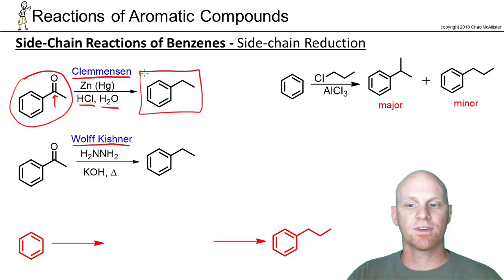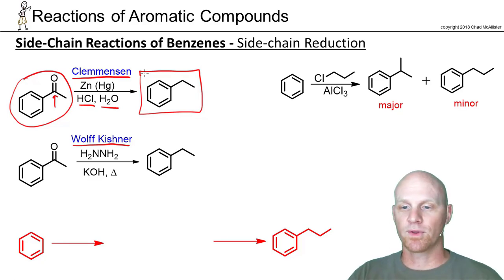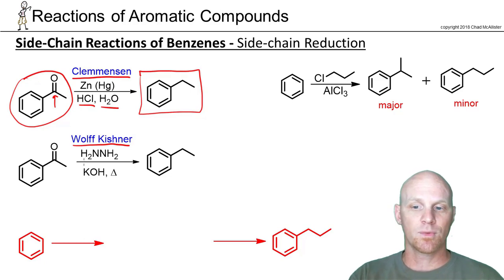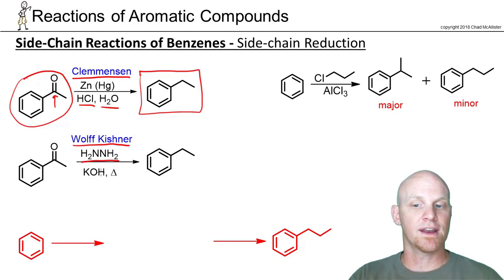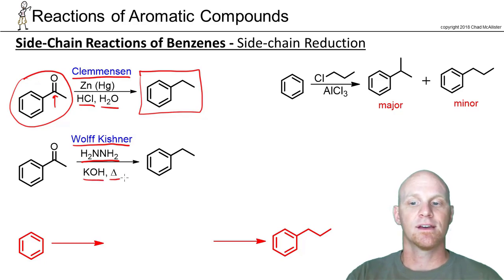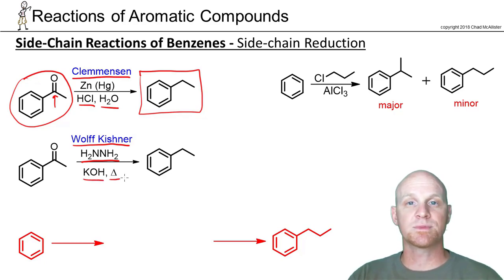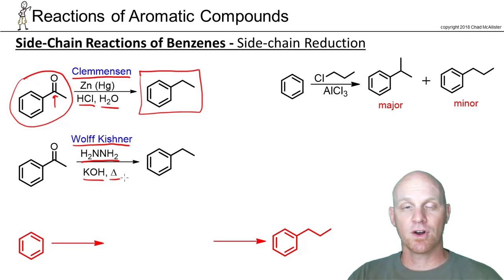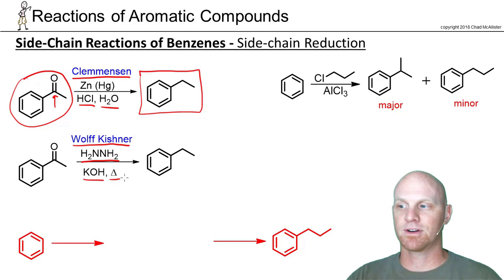The Wolff-Kishner reaction does the same thing — totally different pathway and mechanism — but we're not going to cover it now either. Here we use hydrazine, N₂H₄ (also written NH₂NH₂), under basic conditions with heat. The Wolff-Kishner does exactly the same thing and is also specific to ketones and aldehydes. Again, the substrate doesn't have to be in the sidechain of benzene, but that's the relevance in this chapter.